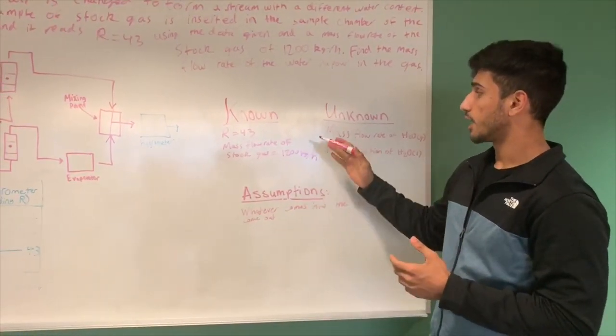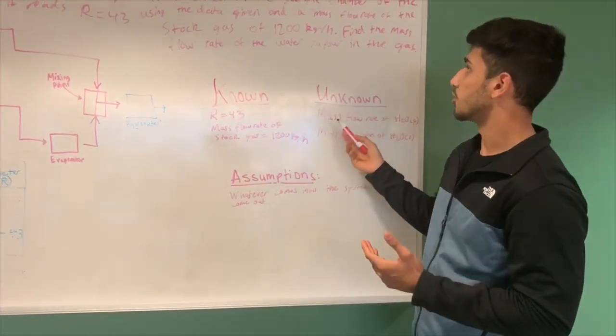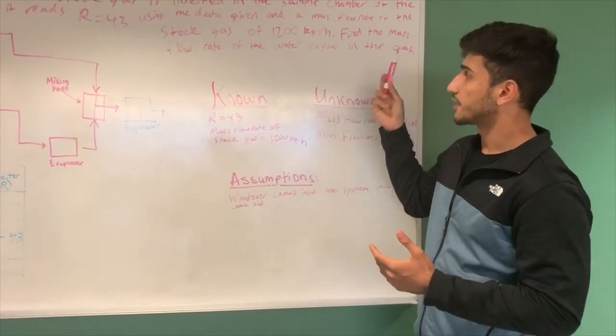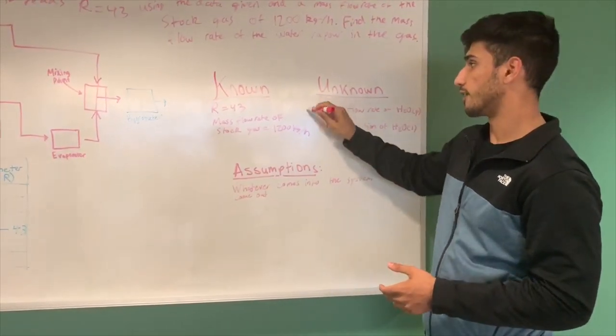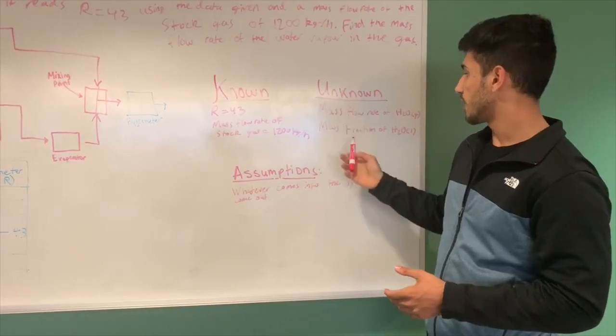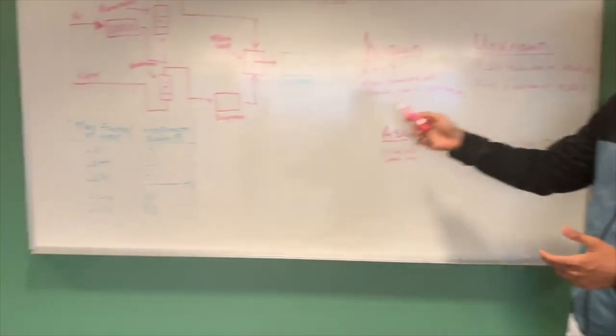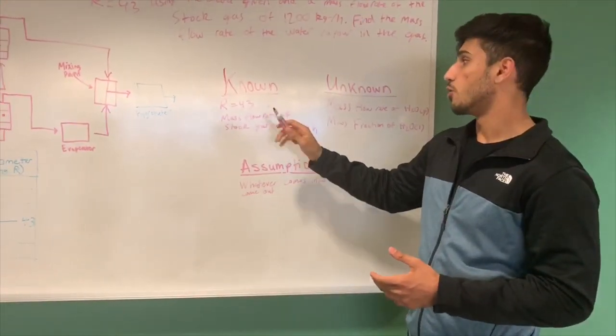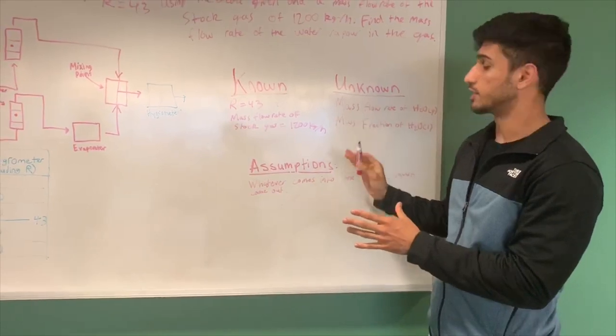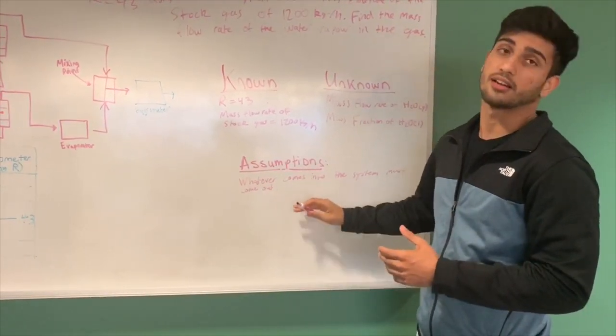From that we have some unknowns that we need to address. We're asked to find the mass flow rate of water vapor, and we also have the unknown of mass fraction of water which isn't given in our table and should correlate to the hygrometer reading of 43. In order to solve this we need to assume that whatever comes into this system must come out of this system.